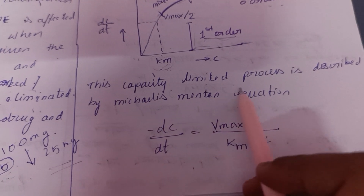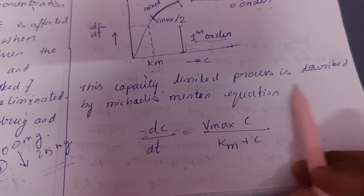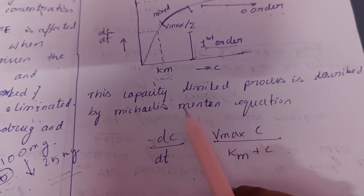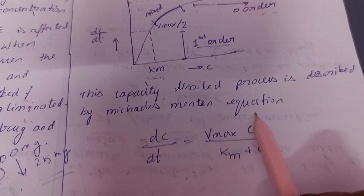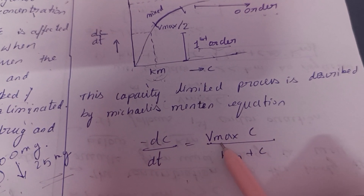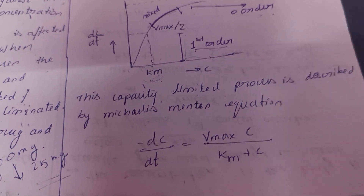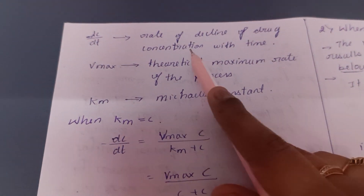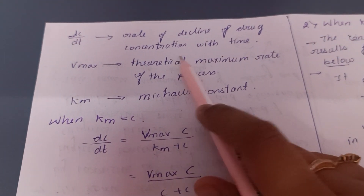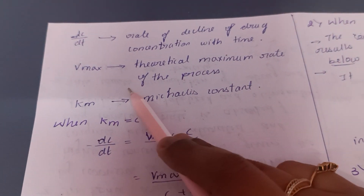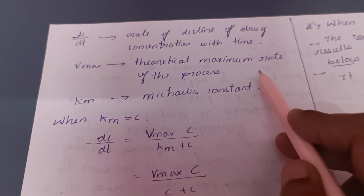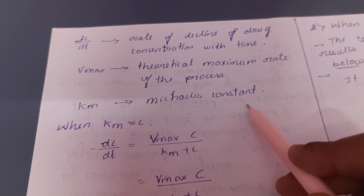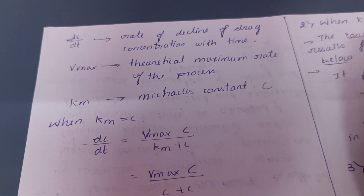This is a capacity-limited process described by the Michaelis-Menten equation. The equation is: DC/DT = Vmax × C divided by (Km + C). Here DC/DT is the rate of decline of drug concentration with time. Vmax is the theoretical maximum rate of the process, Km is the Michaelis-Menten constant, and C is the drug concentration.